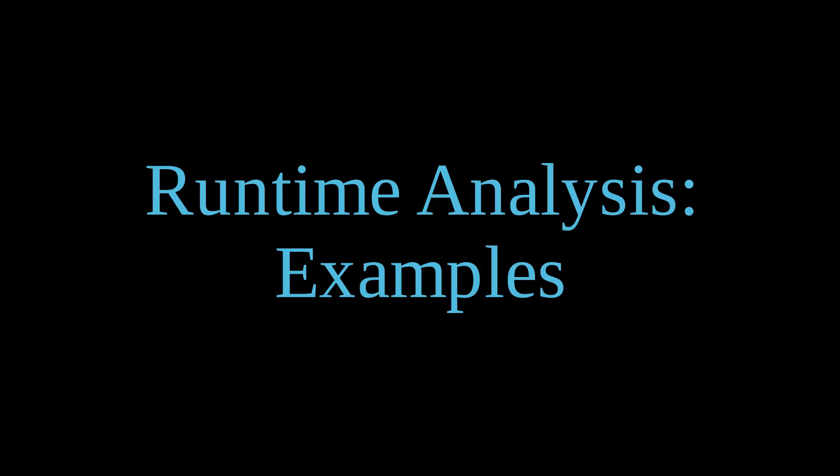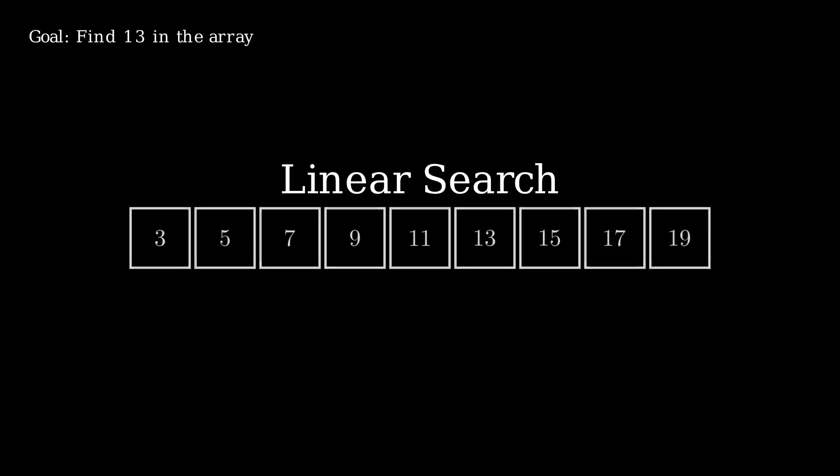For our first example, consider linear search. Linear search is an algorithm designed to find a specific element in an array by starting from one end and iterating one index at a time until the element is found. Pause the video and think about what the complexity of this algorithm would be in terms of n, the length of the array.